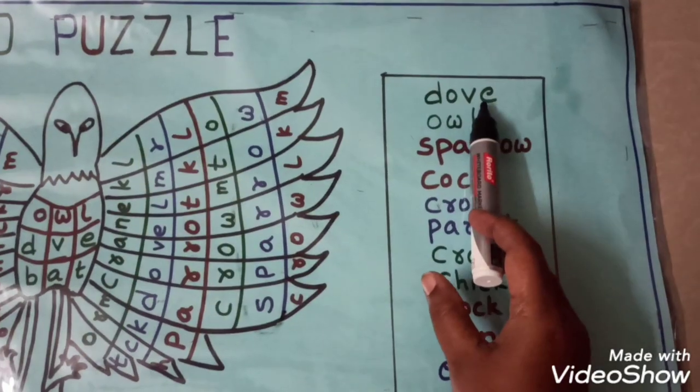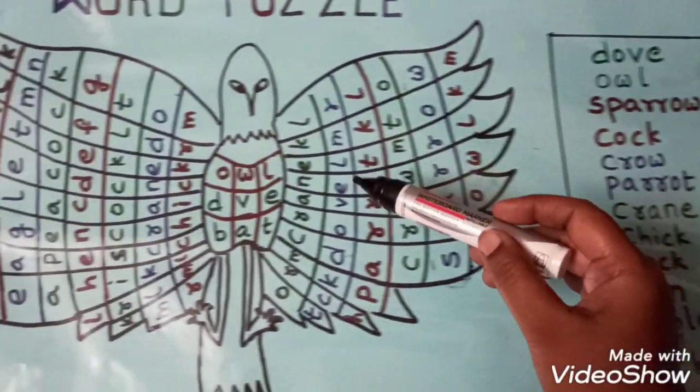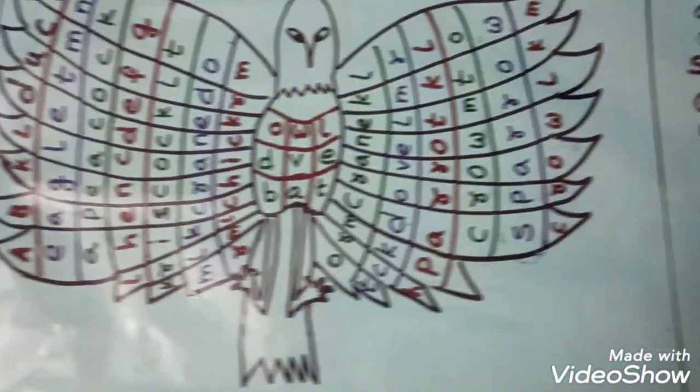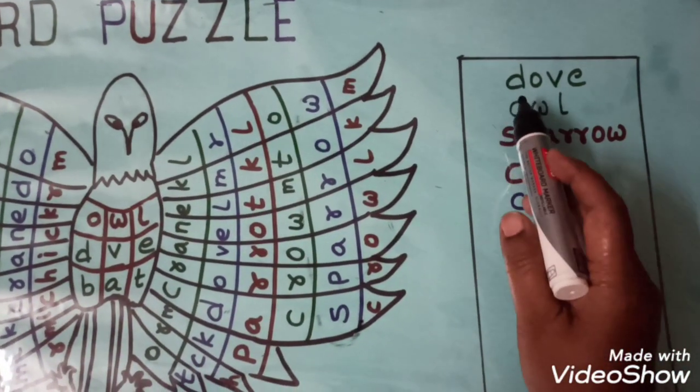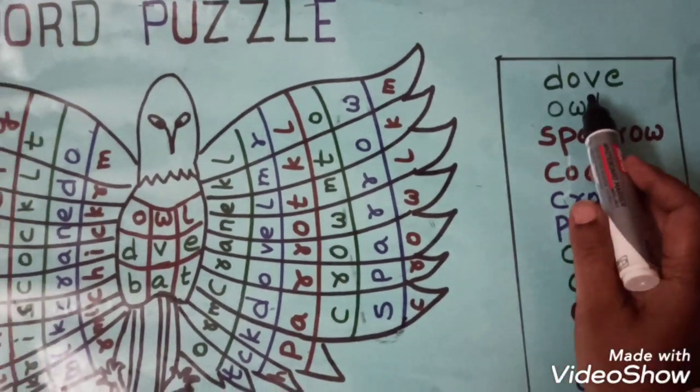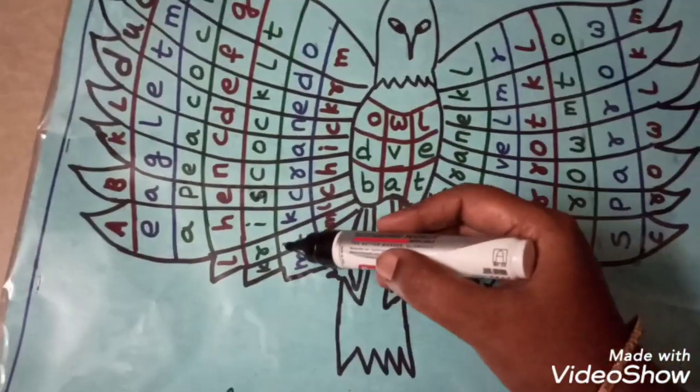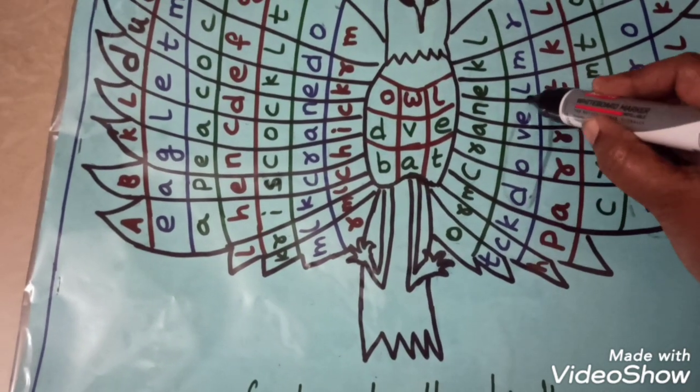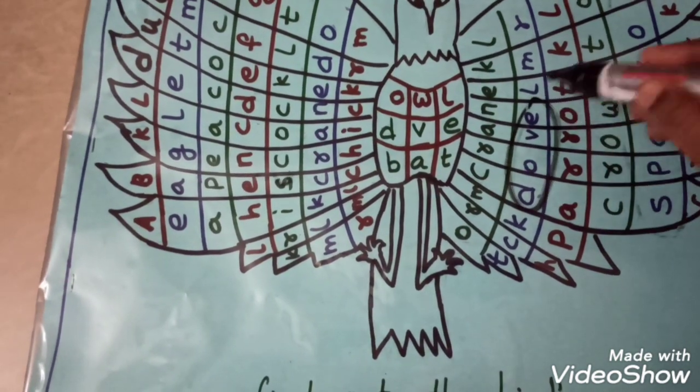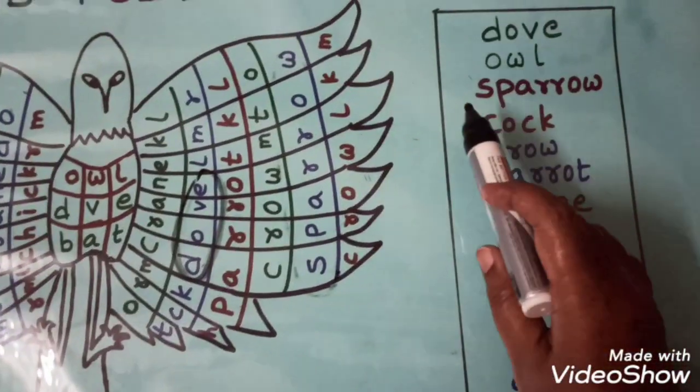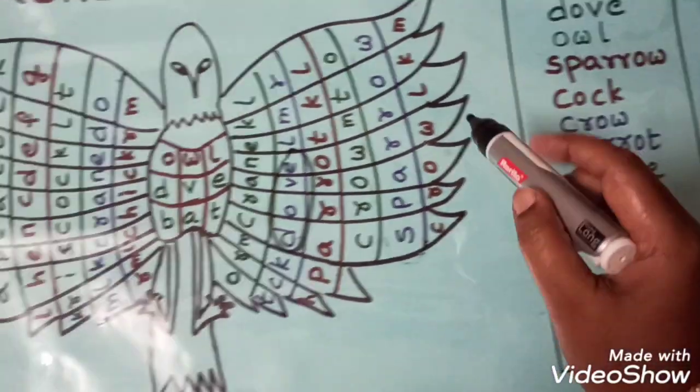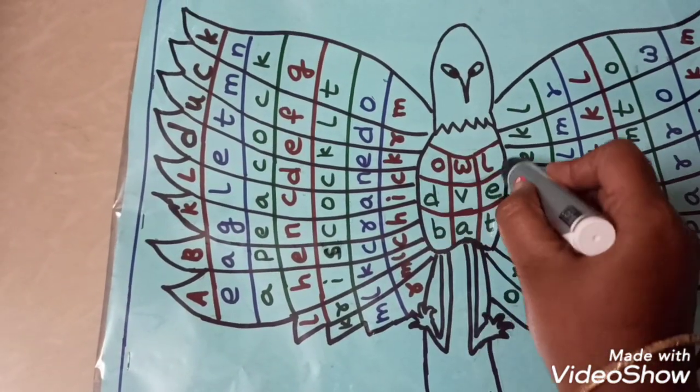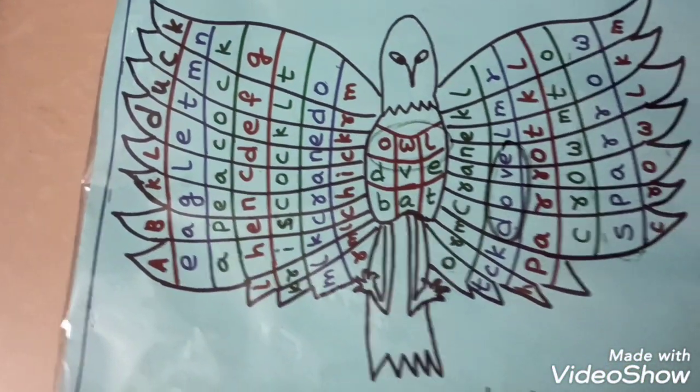Next they will identify that bird name in this eagle and they will mark in this eagle. For example, here the first word is d-o-v-e, dove, and they will find out where is the dove. Here it is, and they will mark in this eagle image. Next word is owl, o-w-l, owl, like this.